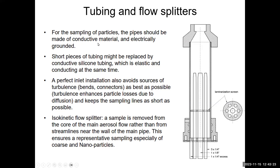For sampling particles, pipes should be made of conductive material and electrically grounded to keep charged particles in the system. Dielectric materials like plastics accumulate static charges and remove charged particles. Shorter pieces of tubing might be replaced by silicon-conductive tubing, which is both elastic and conducting. A perfect inlet installation also avoids sources of turbulence and keeps sampling lines as short as possible. An isokinetic flow splitter ensures that samples are removed from the core of the main aerosol flow rather than from streamlines near the wall, ensuring representative sampling especially of coarse and nanoparticles.